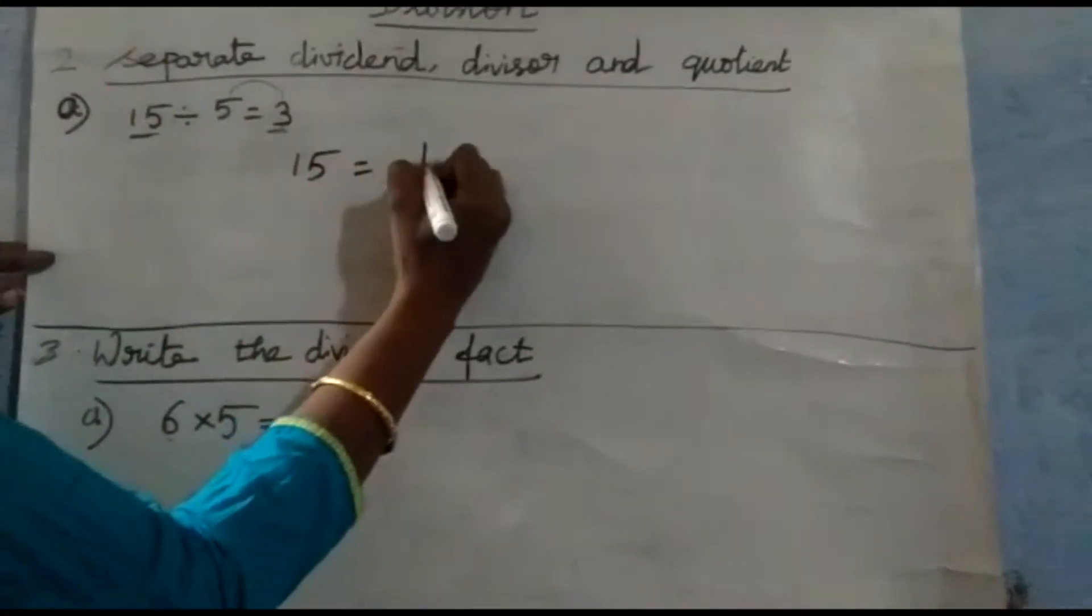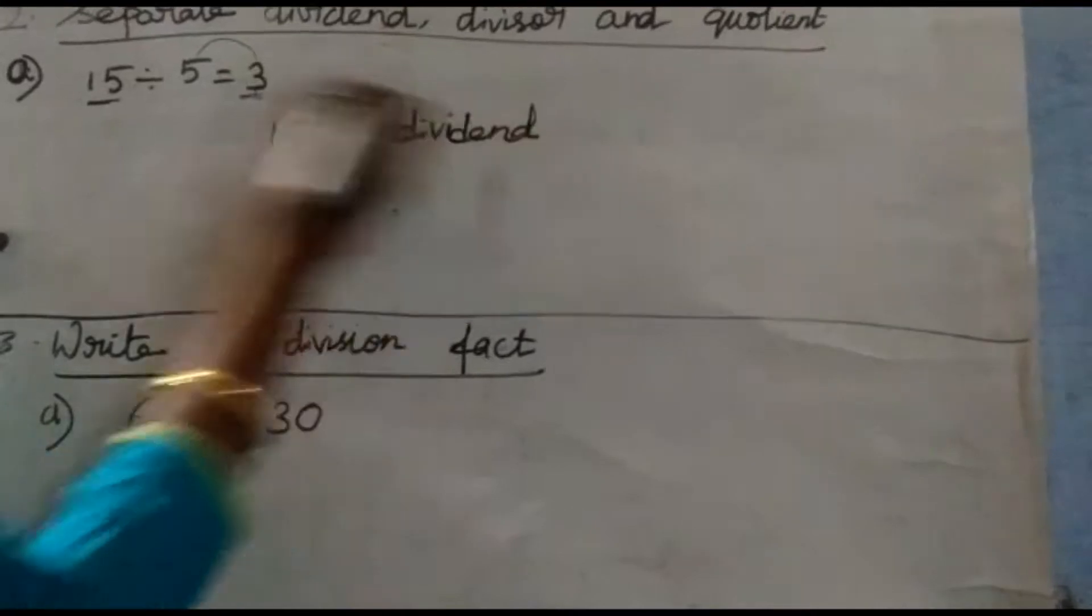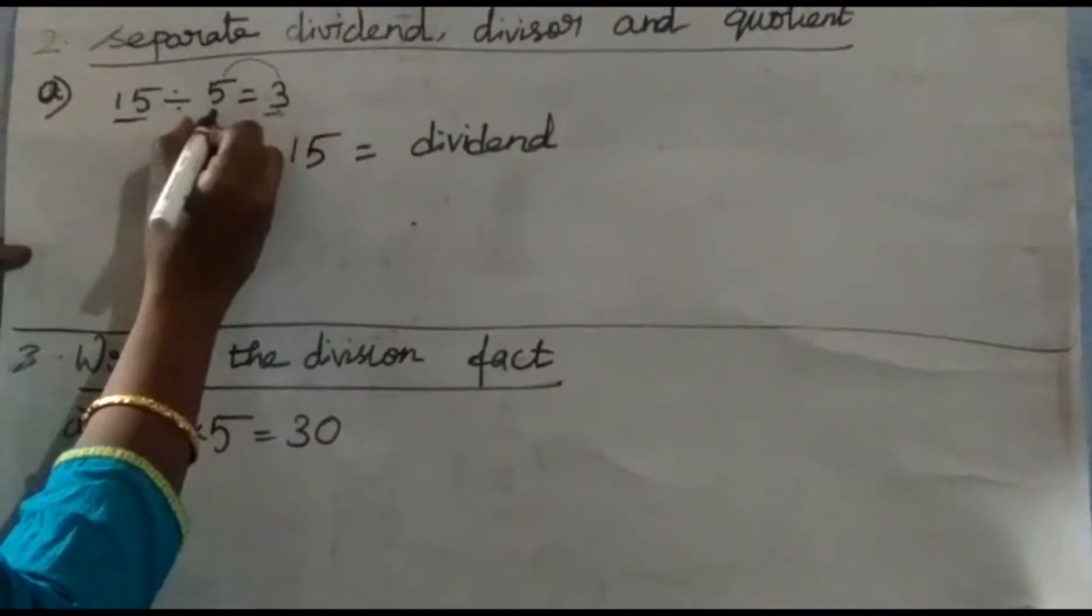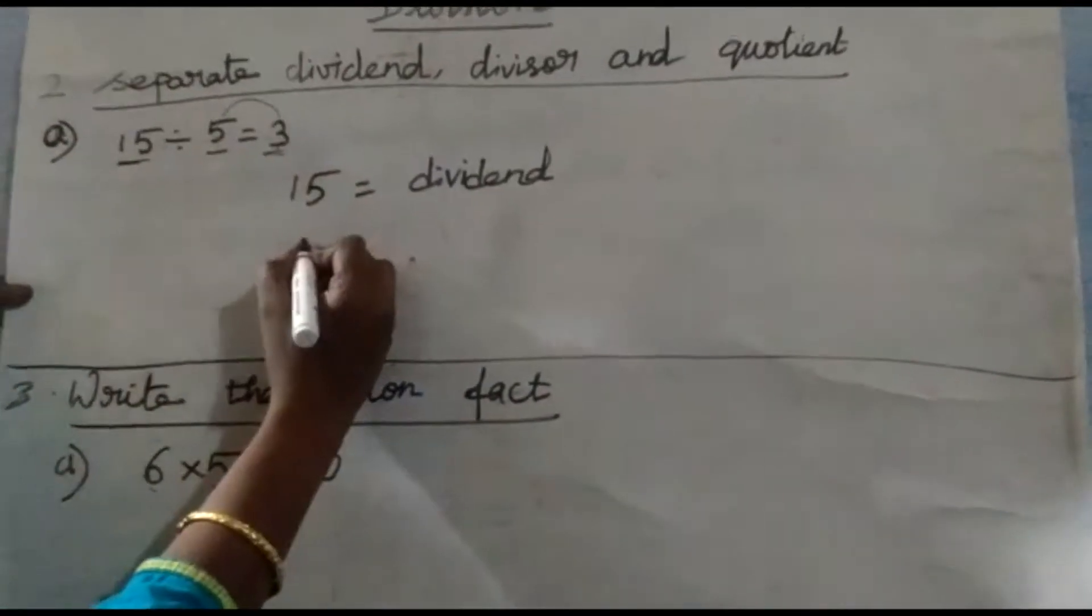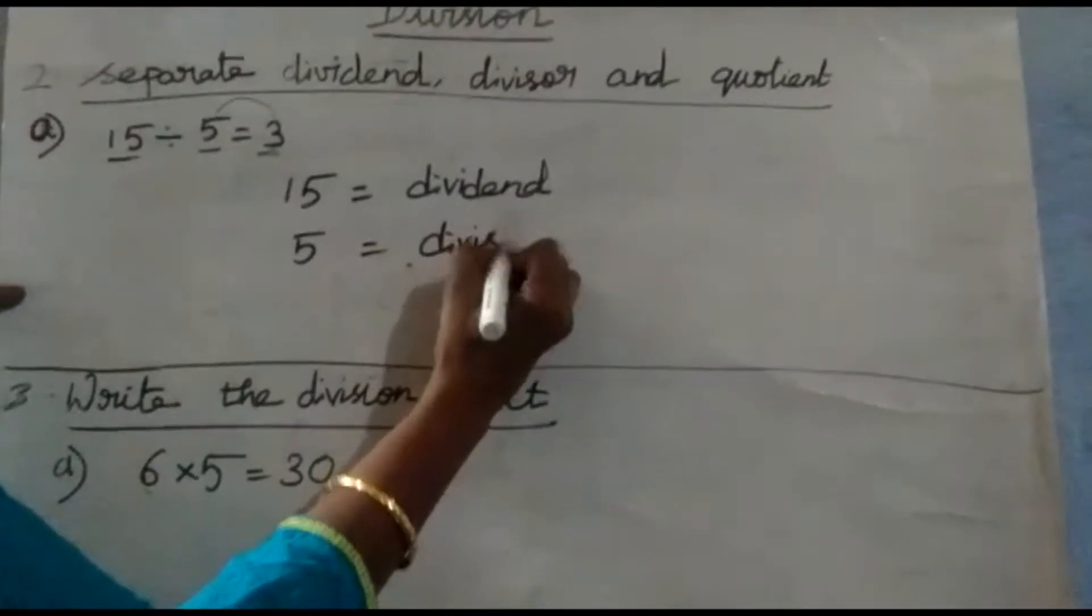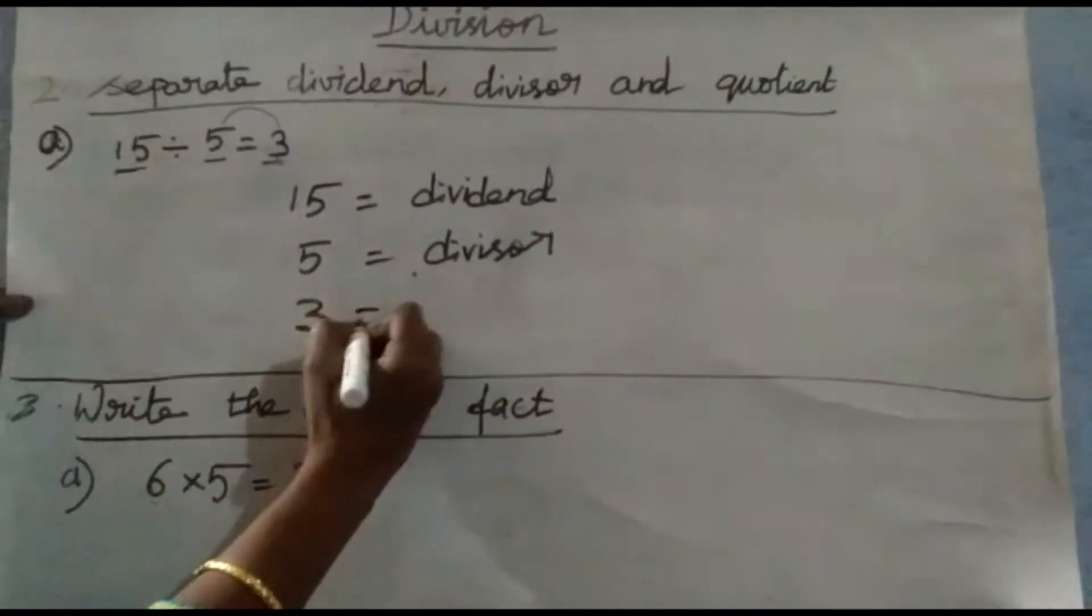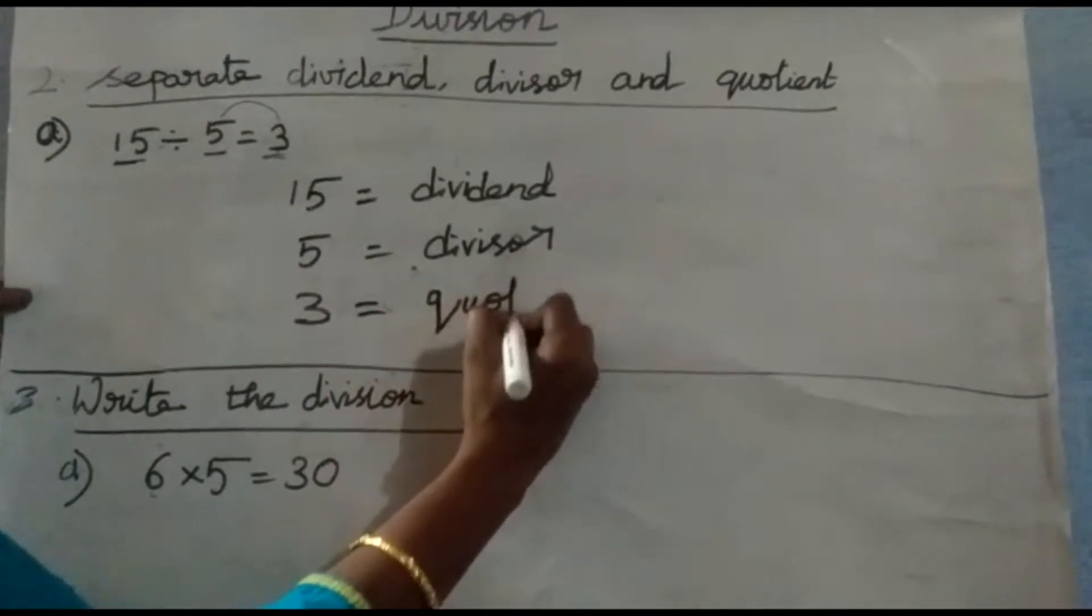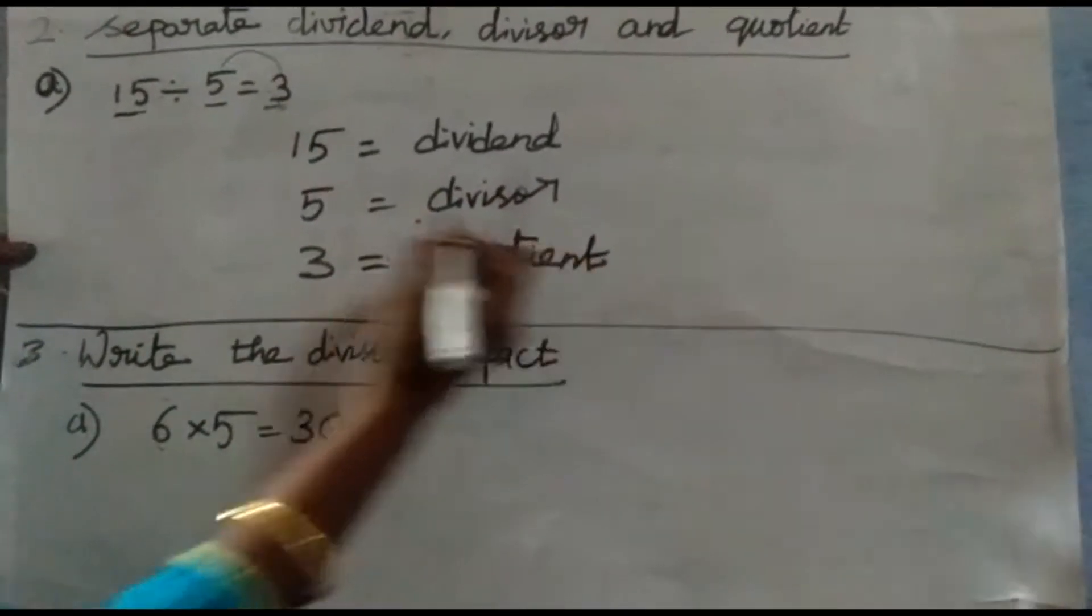15 equals dividend. And which table we are going to use here? 5 table. This is the divisor. That is the 5 table we are going to use, so this is called divisor. So 5 equals divisor. And 3 is called quotient. In division, the answer is called quotient. So here 3 is the answer, that is called quotient.